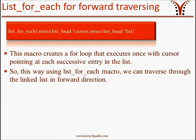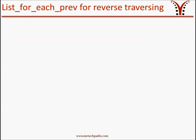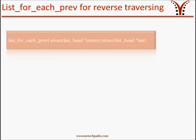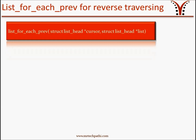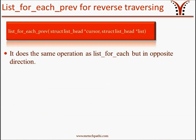What if we want to traverse the list in backward direction? Kernel programmers are generous. They have provided us the list_for_each_prev macro. This macro does the same operation as list_for_each but in the opposite direction. We will be discussing more about different variants of list_for_each macros in the next session. Thanks for watching this video.